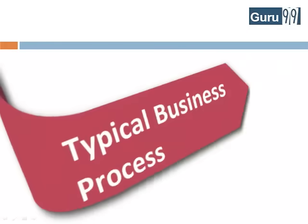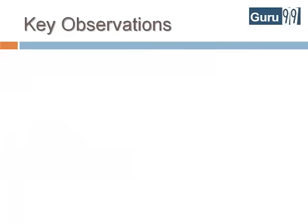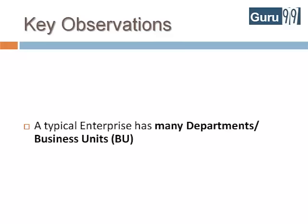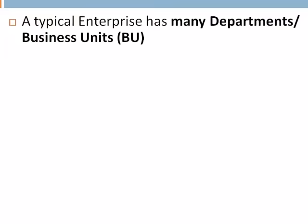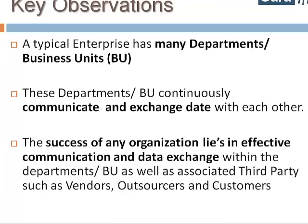That is the typical business process of any manufacturing company. Some key inferences one could derive from the scenario: a typical enterprise has many departments or business units. These departments continuously communicate and exchange data with each other. The success of any organization lies in effective communication and data exchange within these departments, as well as associated third parties such as vendors, outsourcers, and customers.